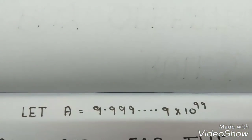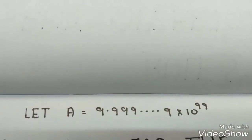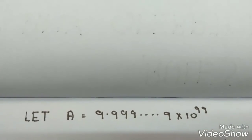Let the value of a be 9.999 into 10 raise to 99 which is the largest number which can be displayed on the calculator.